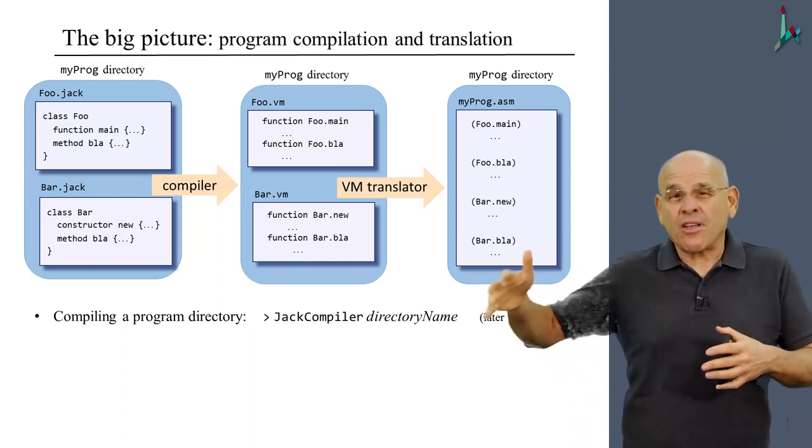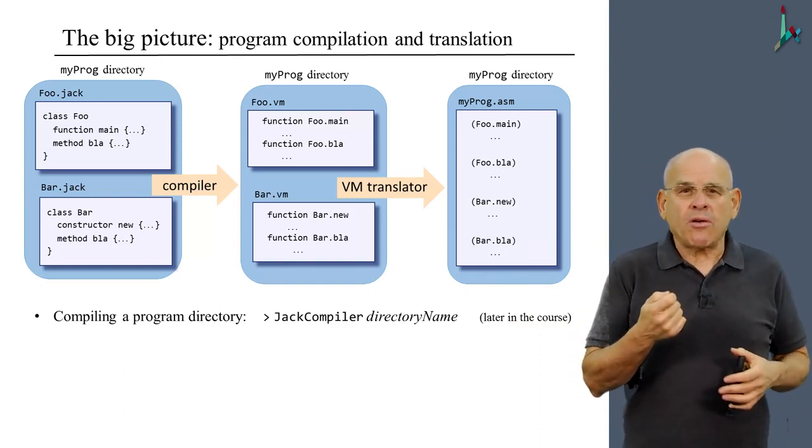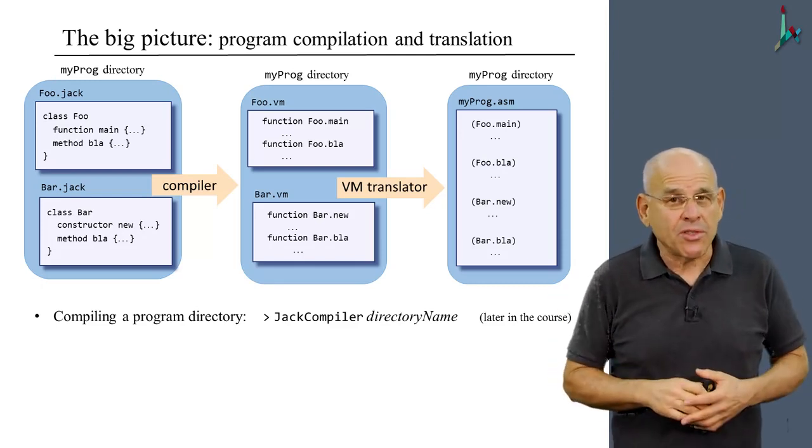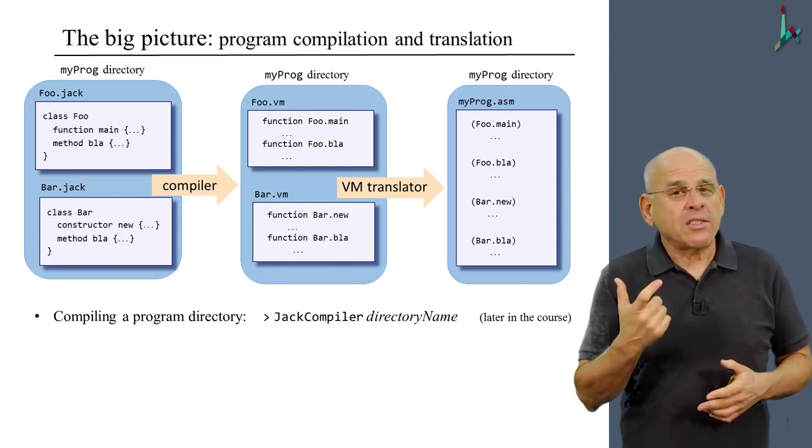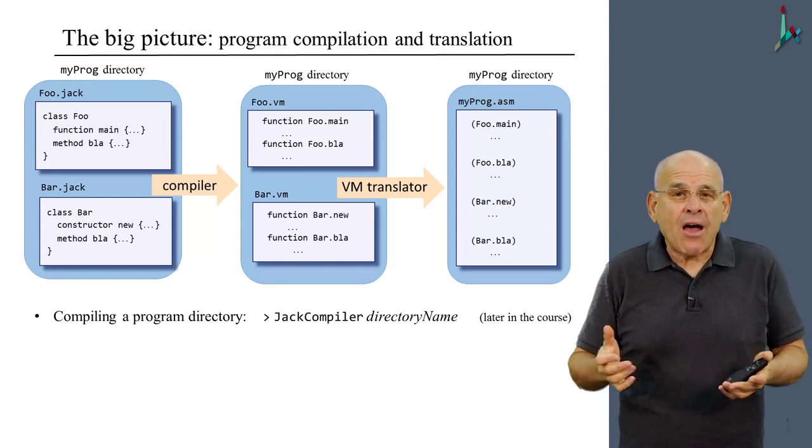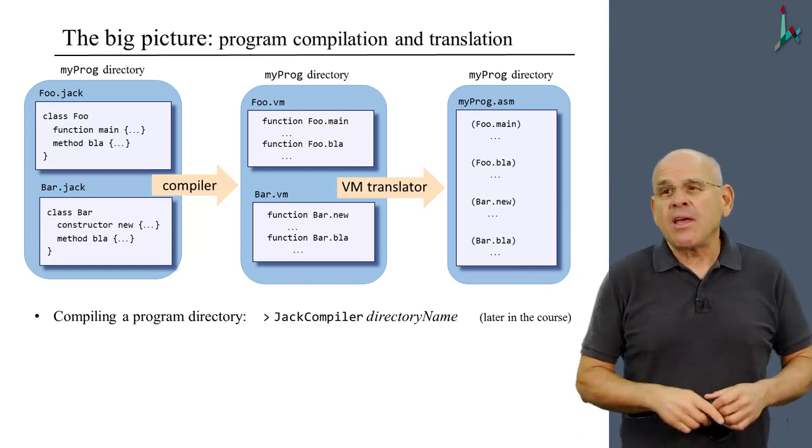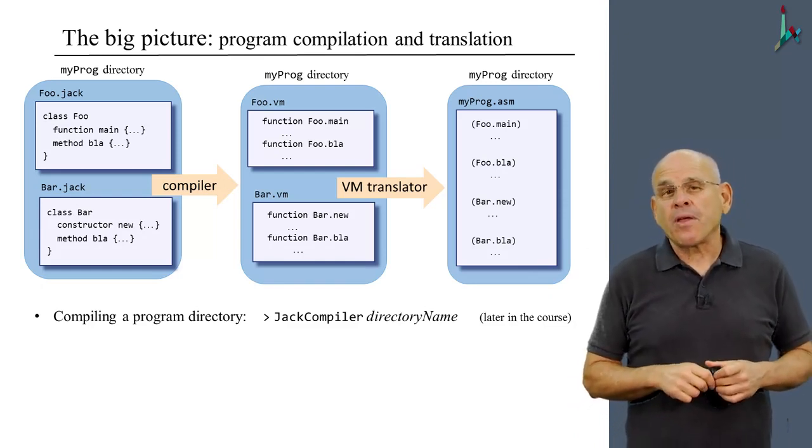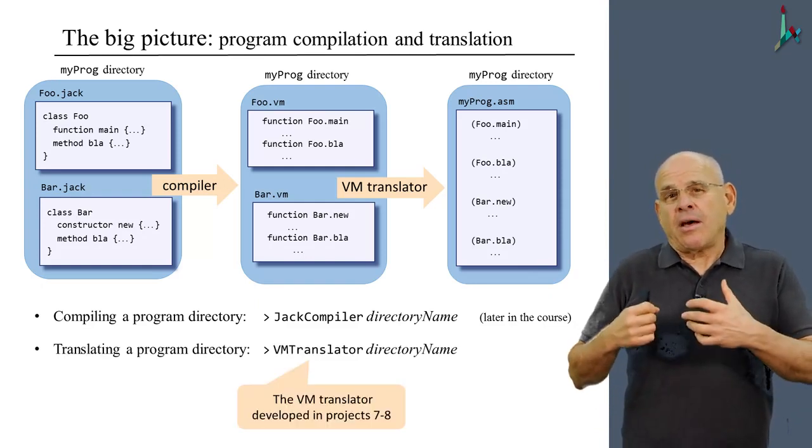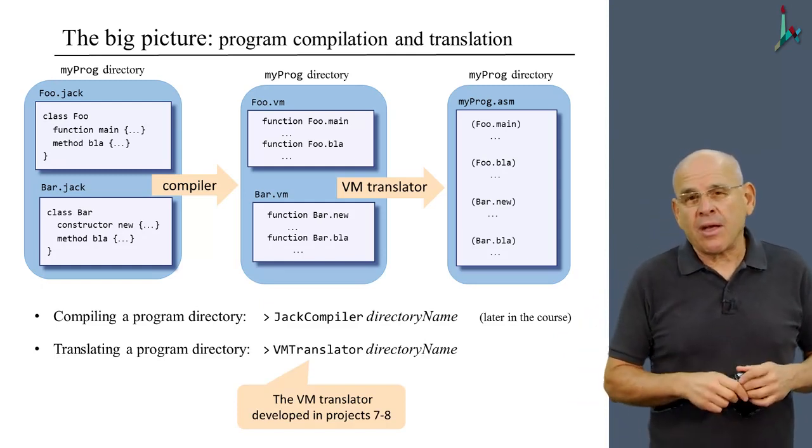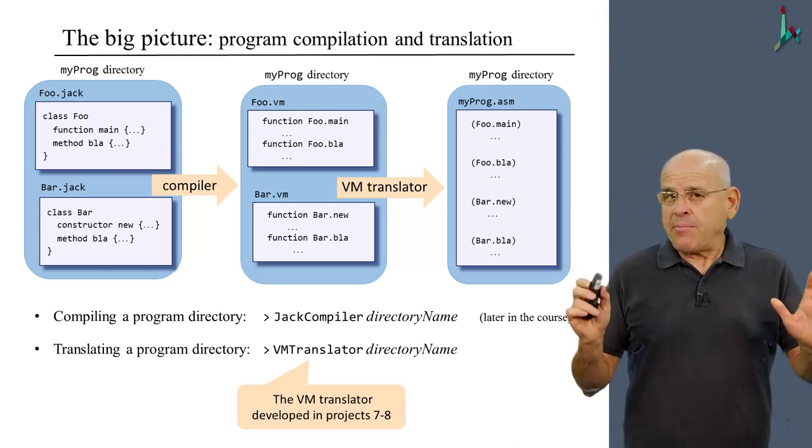It will transform them into a single assembly file. Notice how several things got lost in the translation. When we translated from Jack to the VM, we lost the notion of constructors, methods, and functions, because everything became functions. When we translated from the VM to assembly, we lost the notion of functions, because now we just have a long stream of assembly commands. We have to use assembly in order to capture the semantics of the source VM code. This VM translator is the program that we are developing in the current project and in the previous one.